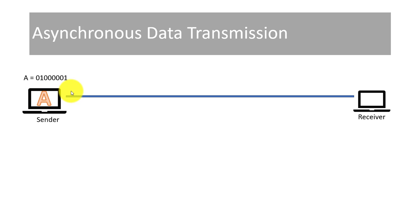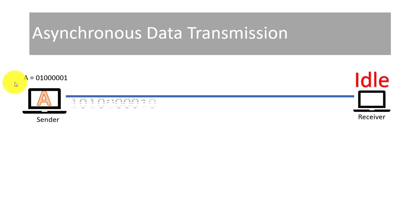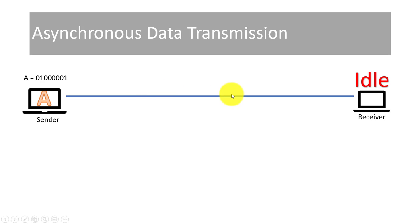Now our receiver is in idle position. Even our sender and receiver are in idle position. Idle position is a position when no transmission takes place — the computer is not sending nor receiving, so our computer is in idle state.